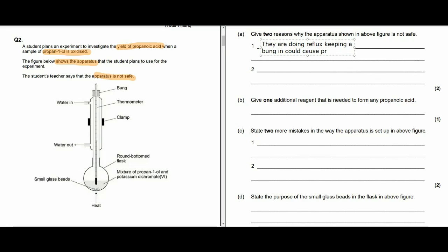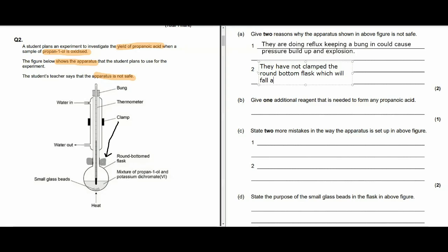So the first thing they've left a bung in the top. Now, when you're doing reflux, you're heating vigorously so that you ensure all of the reactant gets to the final stage. We want carboxylic acid and no aldehydes formed here. So we've got a big problem with a bung in there. You're going to get pressure build up with the expansion of gases and you could get an explosion or the lid could pop off. So don't put a bung in the end. Have an open end. The other problem here that I've identified is a clamp. The clamp is on the wrong place. The clamp should be at the round bottom flask. Otherwise, the bottom will fall off and it will smash.